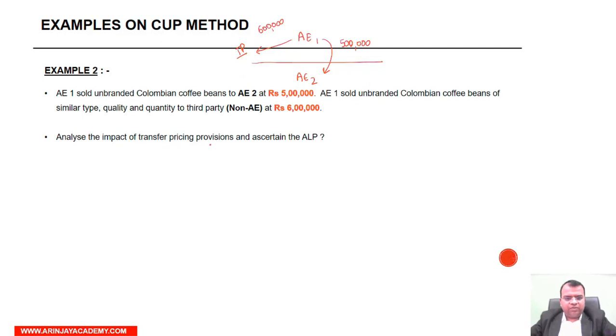Analyze the impact of the transfer pricing provision and ascertain the arm's length price. This transaction between AE-1 and AE-2 is a controlled transaction.